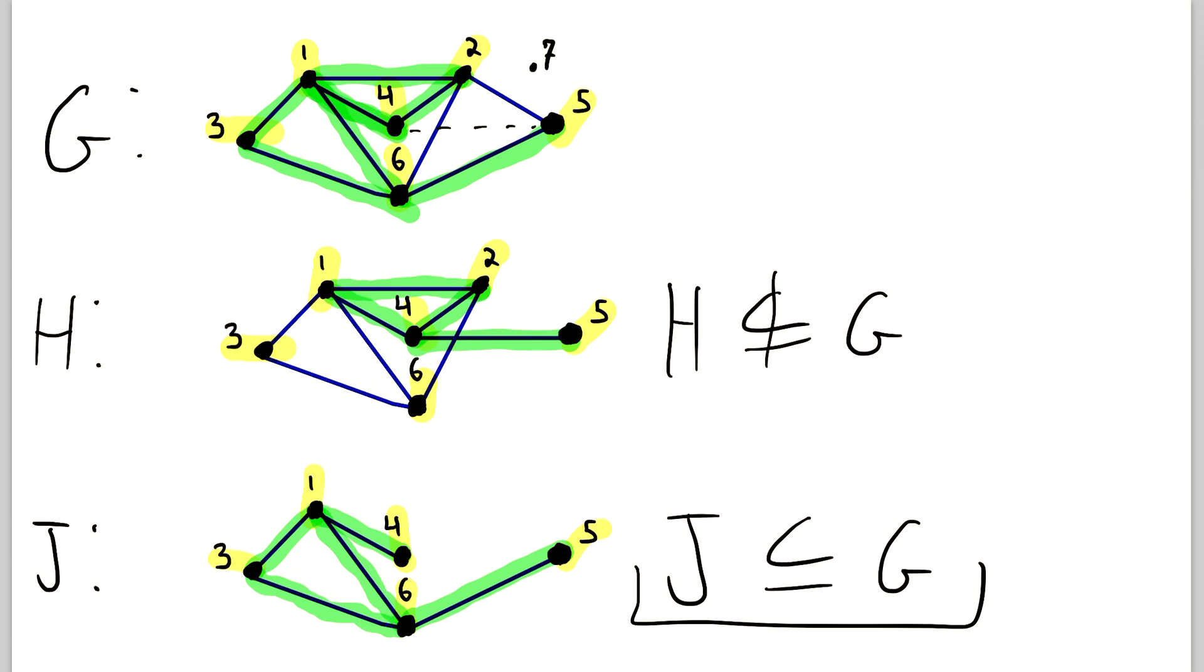Similarly, if we were to connect 4 and 5 in J, just like they were connected in H, then J would not be a subgraph of G.